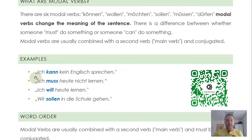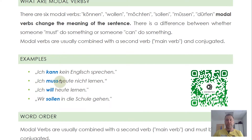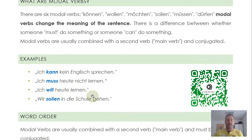Let's have a look at some examples. Ich kann kein Englisch sprechen — I cannot speak English. Here the action is speaking English, but I cannot do that. Ich muss heute nicht lernen — I don't have to study today. The action is still to study, but with müssen it's just changing the modalities. Ich will heute lernen — I want to learn today. We have the same action, but it's entirely different because we use a different modal verb.